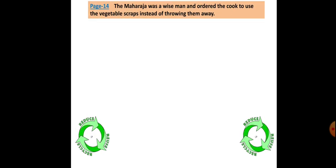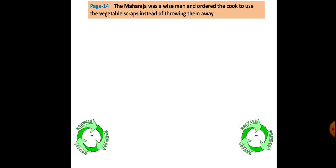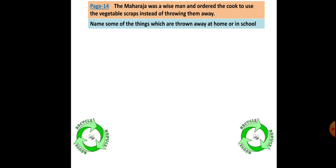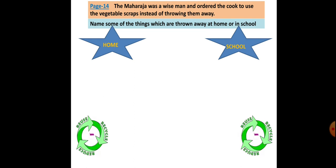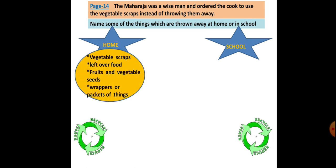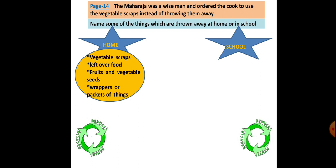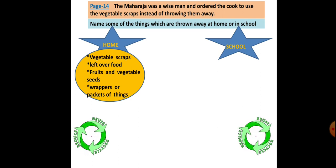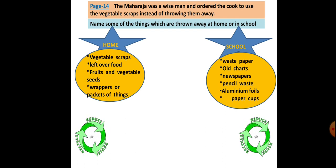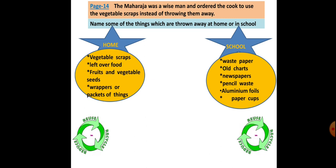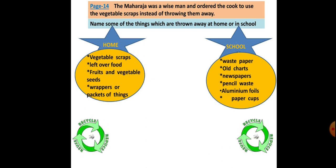On page number 14: the Maharaja was a wise man and ordered the cook to use the vegetable scraps instead of throwing them away. Name some of the things which are thrown away at home or in school. At home we have: vegetable scraps, leftover food, fruits and vegetable seeds, and wrappers of packets. At school we have: waste paper, old charts, newspaper, pencil waste, aluminium foils, and paper cups — some of them from the school canteen.